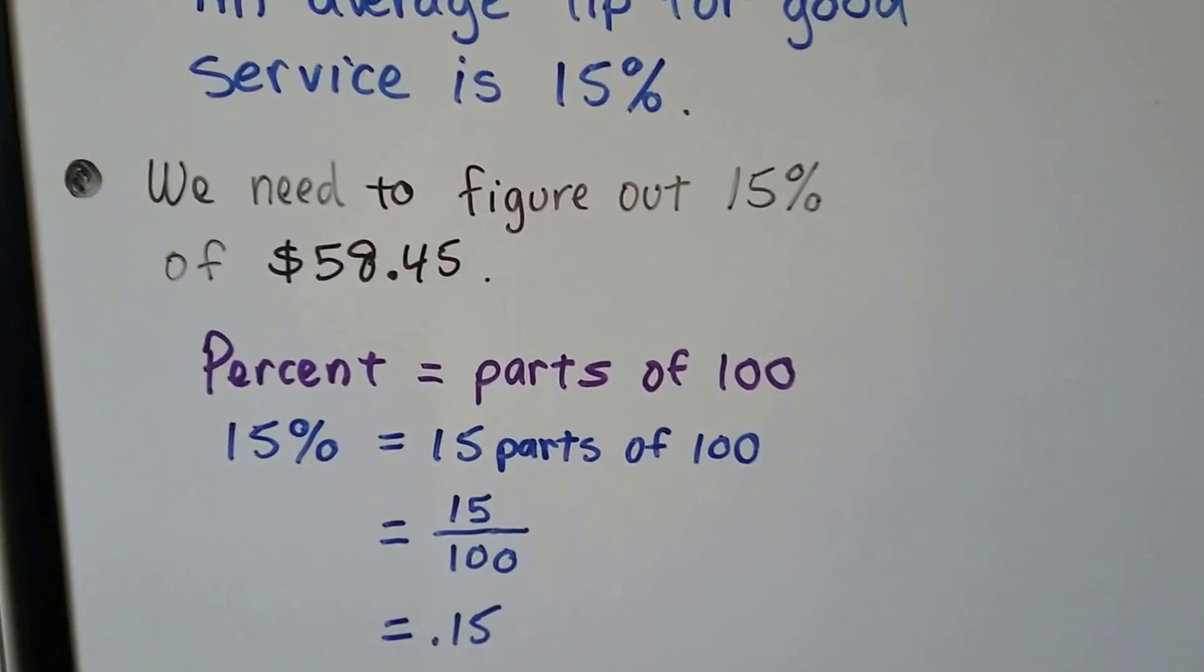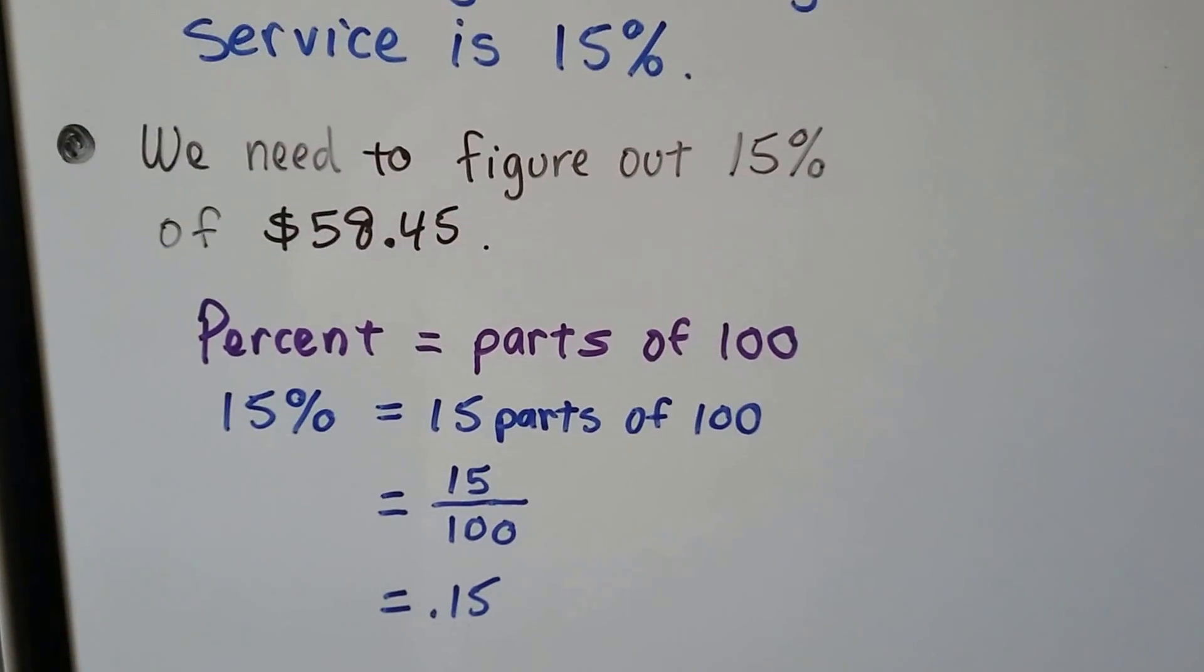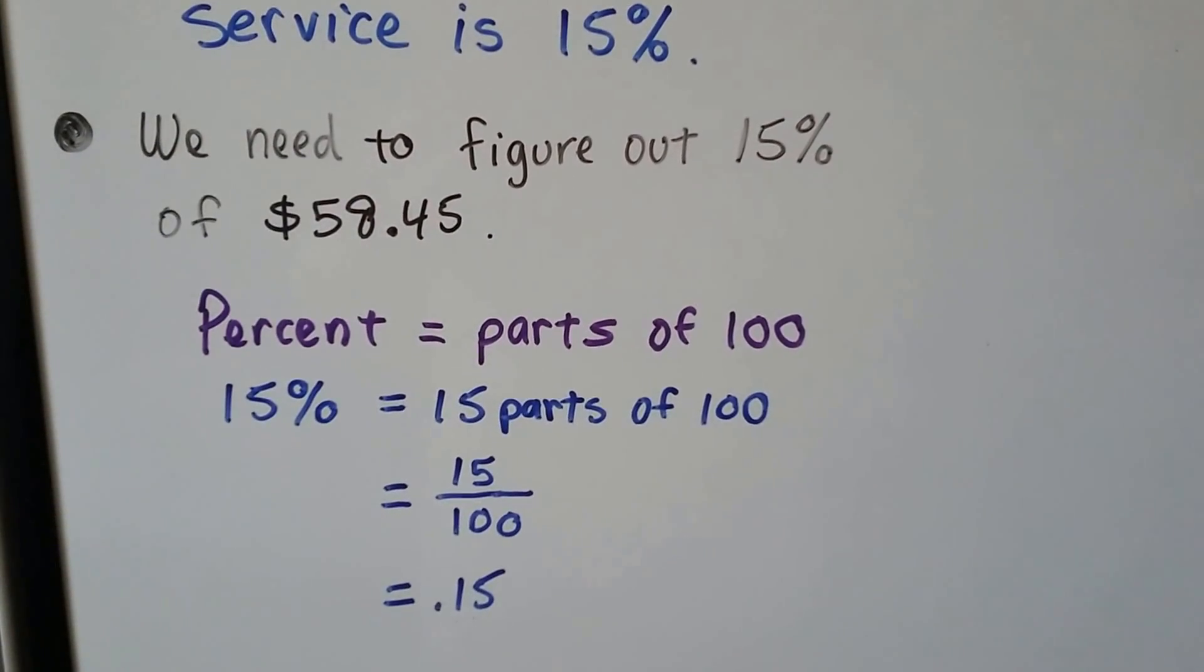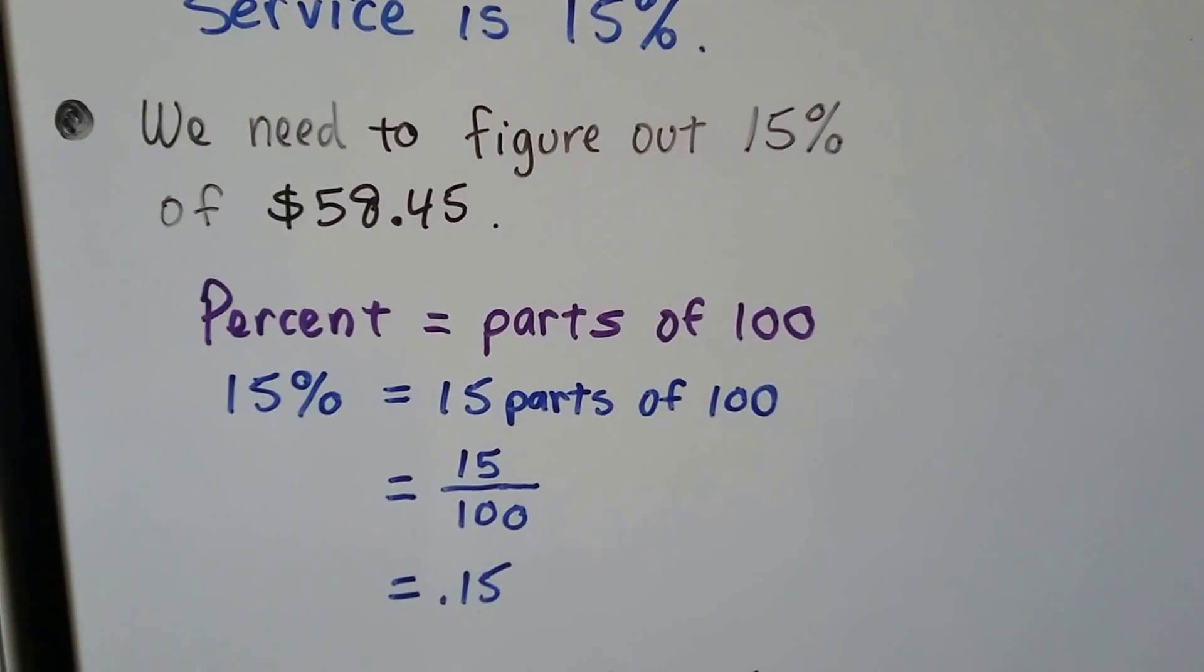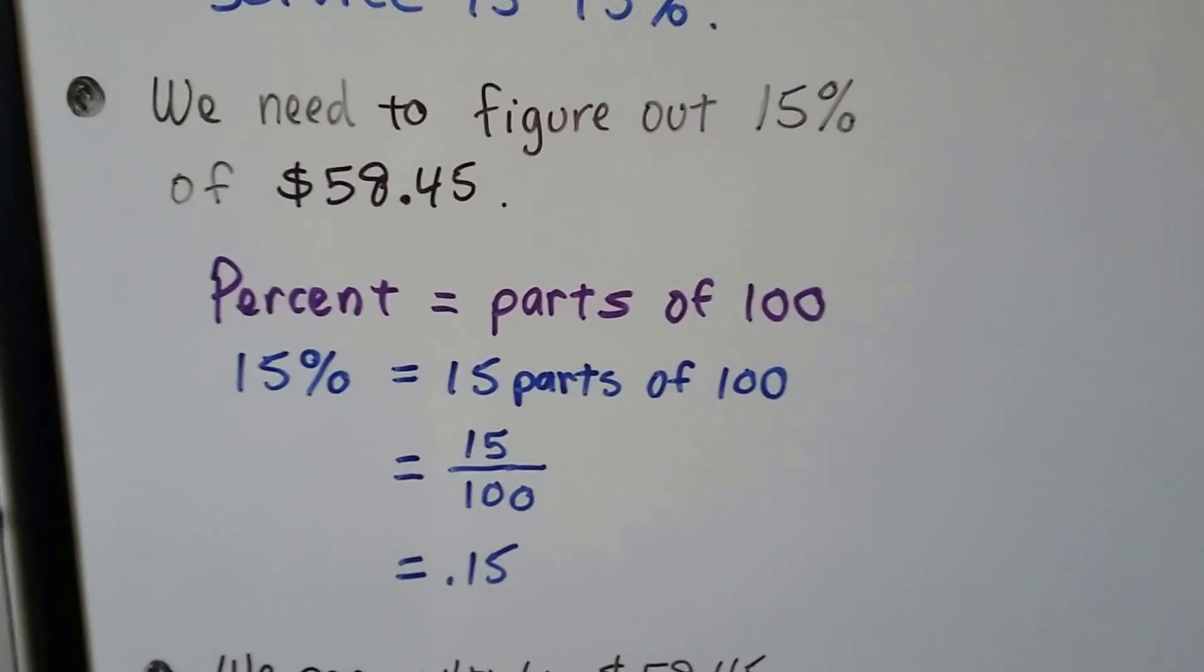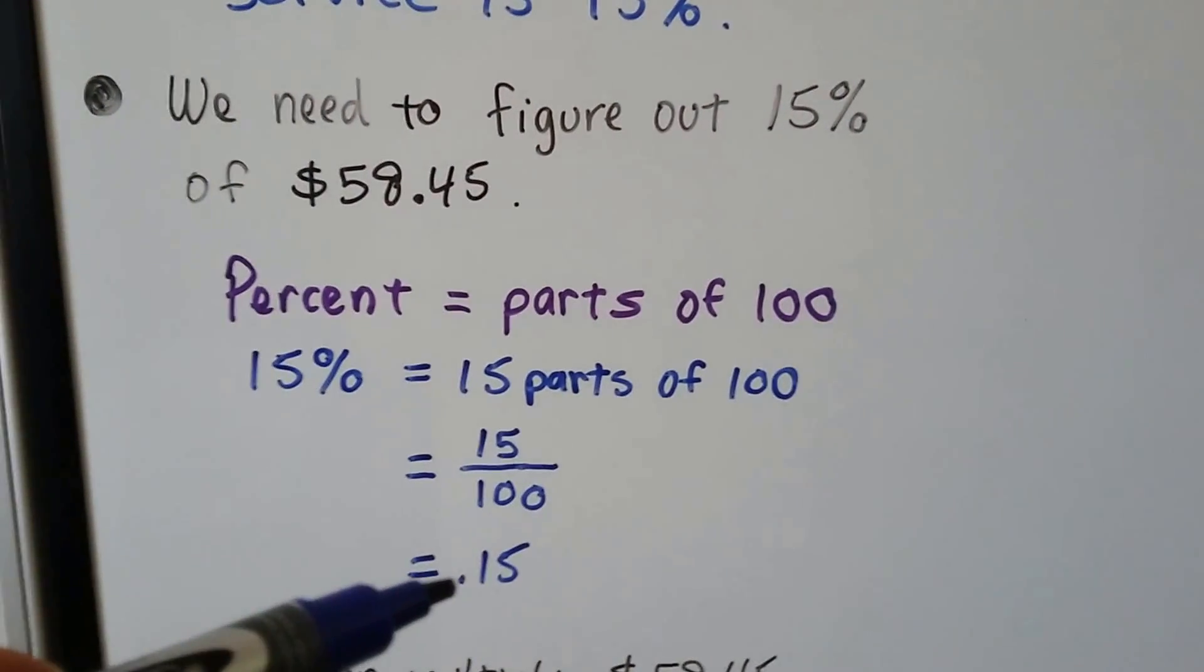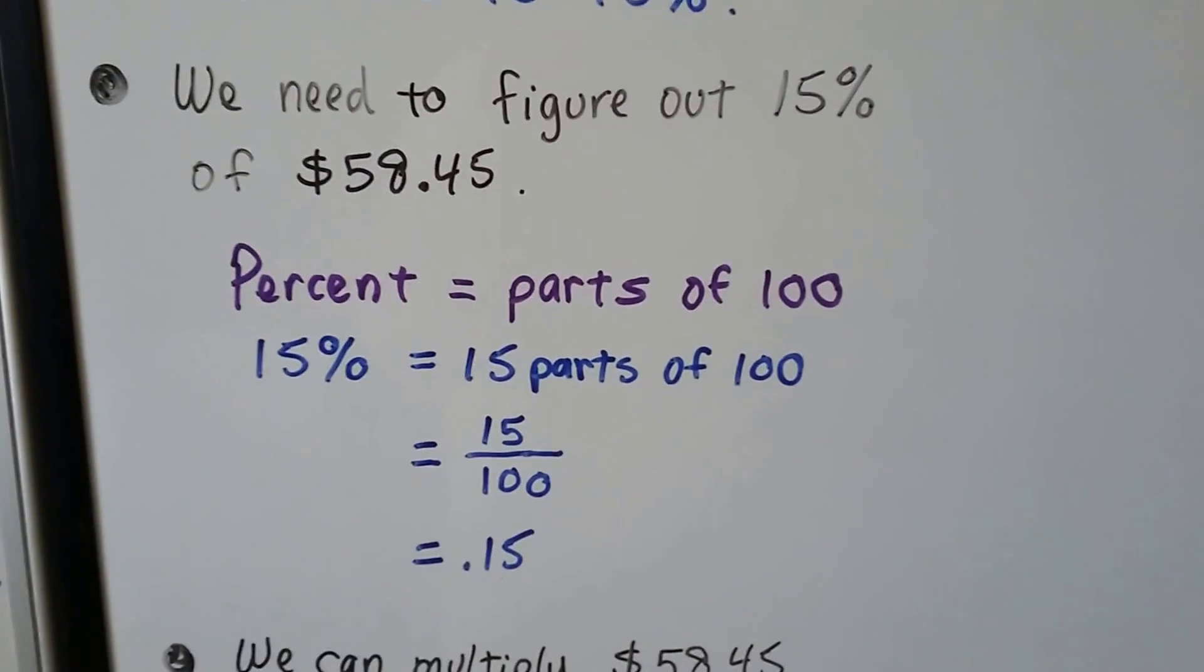Well, a percent means parts of 100. And 15% means 15 parts of 100. It's 15 hundredths. We can write it as a fraction like this, but to help us, we need it as a decimal, 15 hundredths.